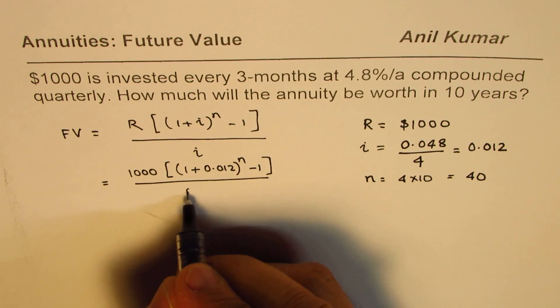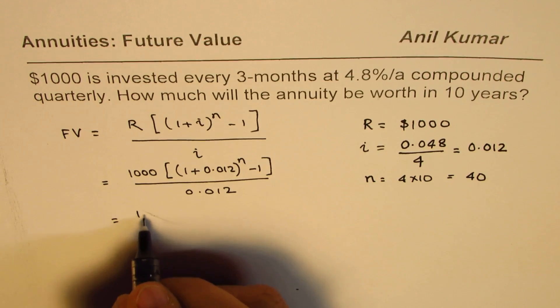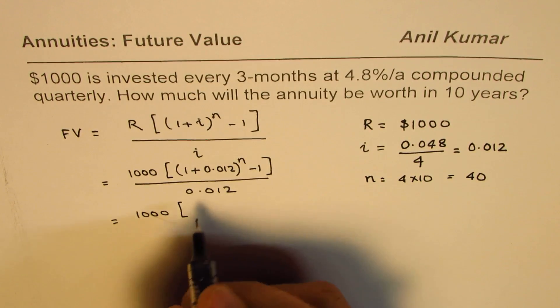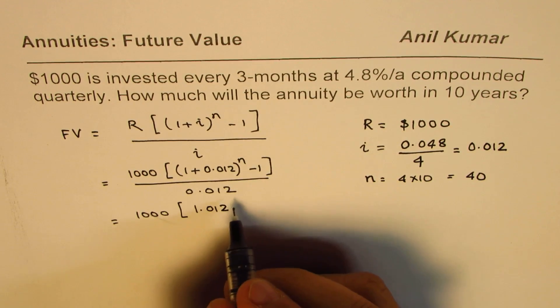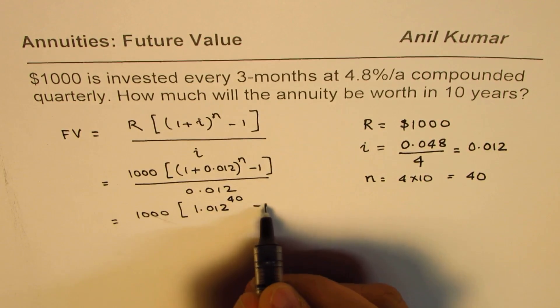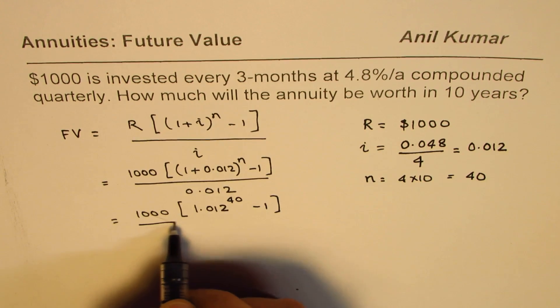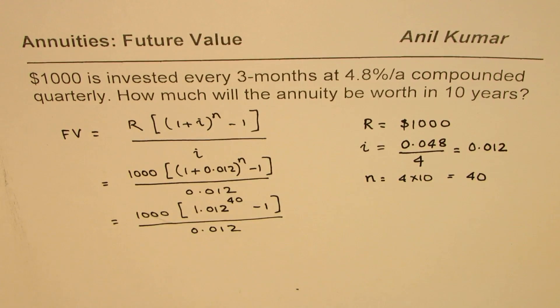Let's rewrite this as 1000 and then we have 1.012 to the power of 40 minus 1 divided by 0.012. Now we can use the calculator to calculate this answer.